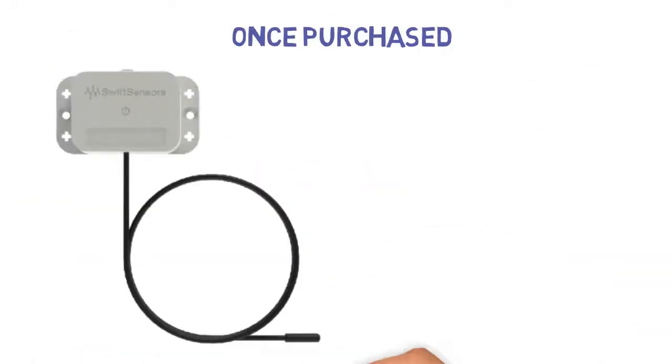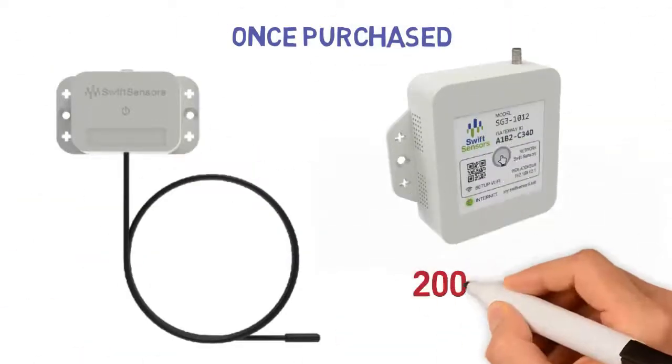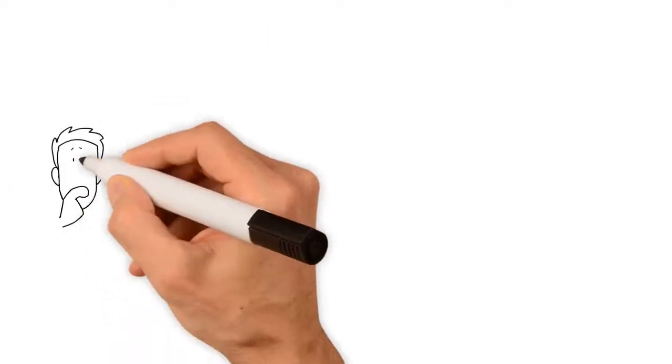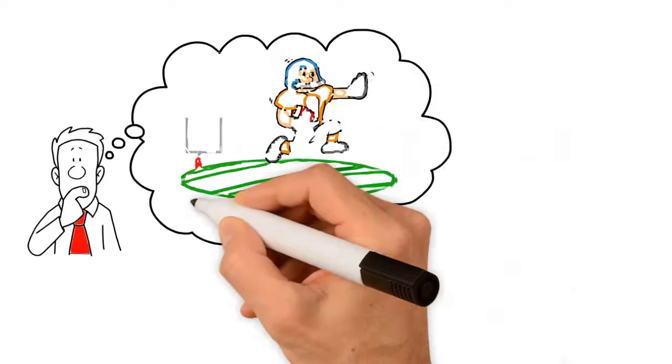simply place your sensor anywhere in your facility as long as it is between 200 to 300 feet away from the gateway. Imagine the same amount of distance as an American football field.